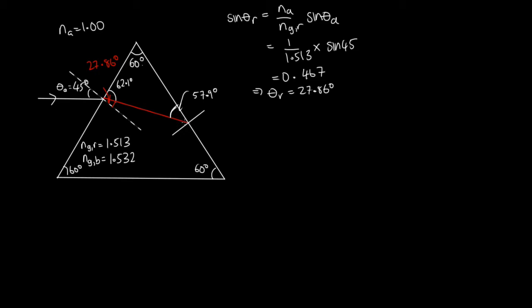So using this triangle here, we've got 60 plus 62.1 plus this angle is equal to 180. So we can solve that to get that the angle in here is equal to 57.9 degrees. And so the angle of incidence when it's leaving the glass prism is this one here. And that will be 90 minus the 57.9, which is equal to 32.1.